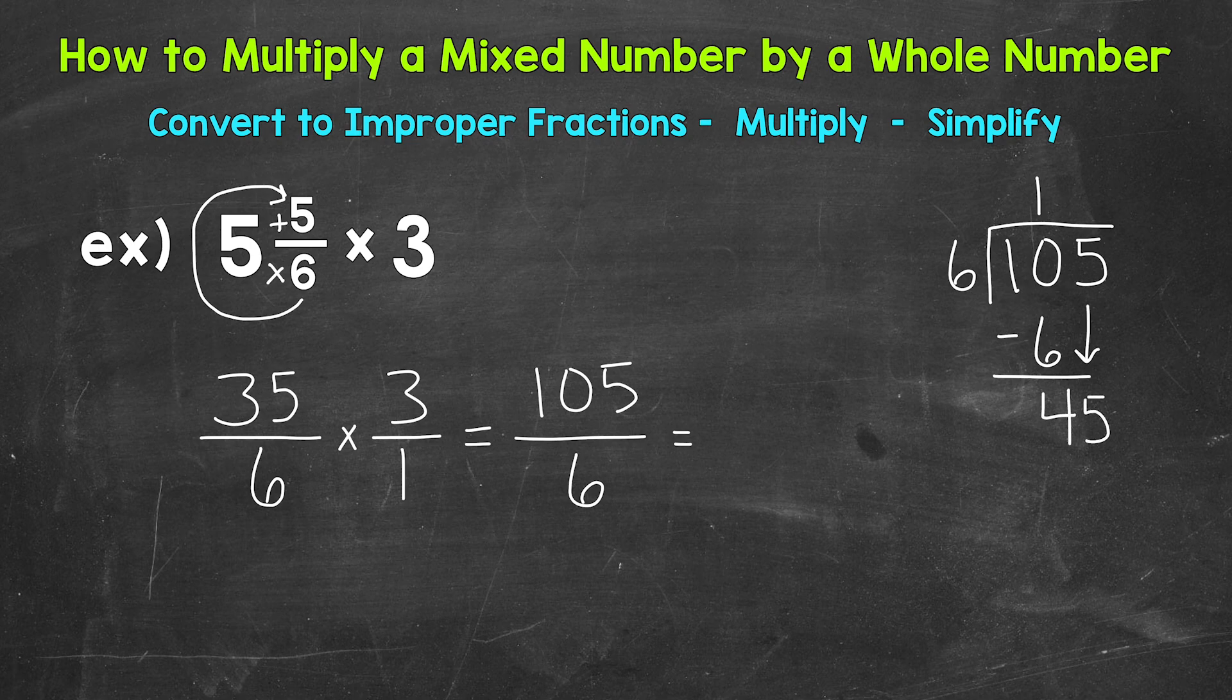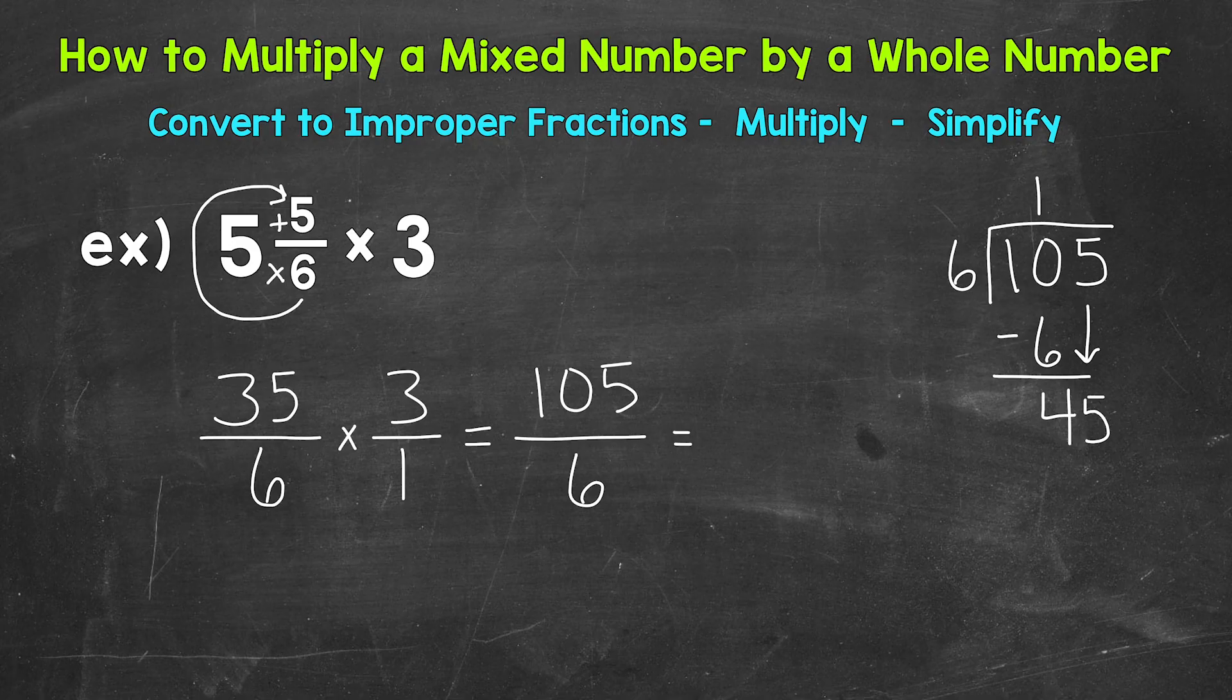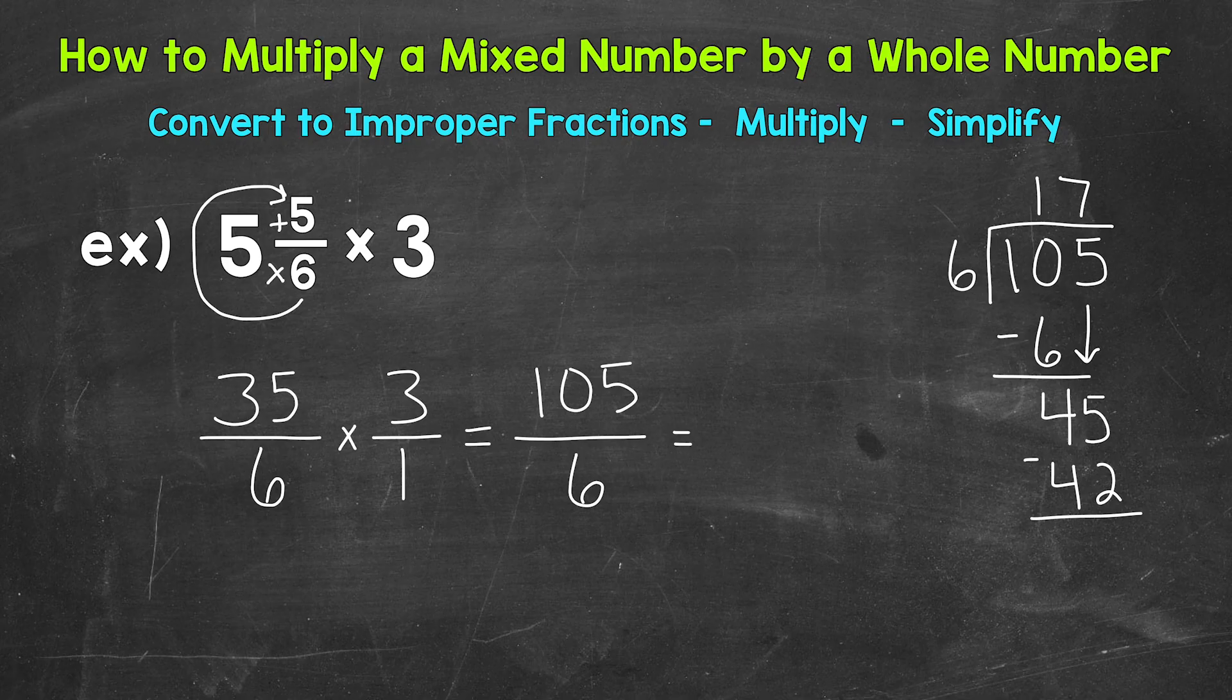So we have 45 divided by 6 now. How many whole groups of 6 out of 45? Well, that's going to be 7. That gets us to 42. So 7 times 6 is 42. Subtract. And we get a remainder of 3. So we do not hit 105 exactly. We have something left over, that remainder 3.